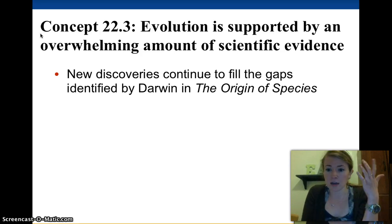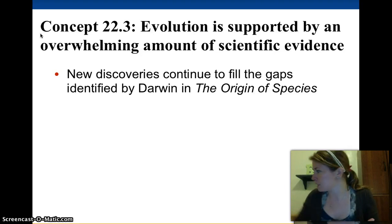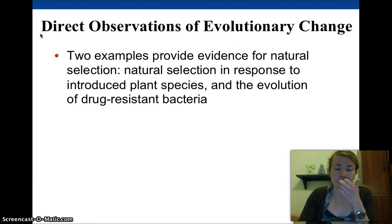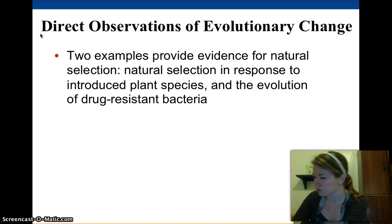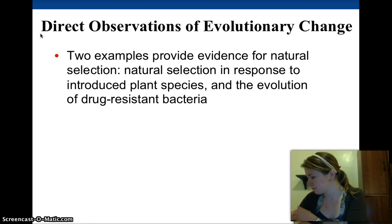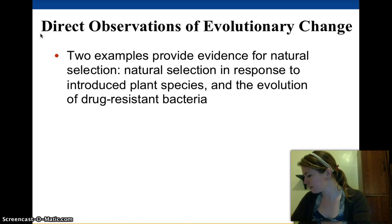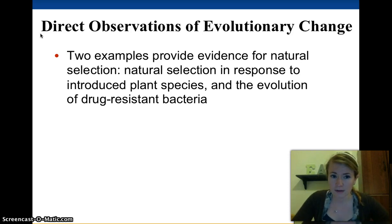So since Darwin wrote On the Origin of Species, we've continued to develop — well, name it evolution — and continue to develop it and come up with new theories and new evidence for it. There are three that your textbook talks about: direct observations of evolutionary change, so we can actually see the evolutionary change happening; homology, which are similar structures; biogeography; and the fossil record.